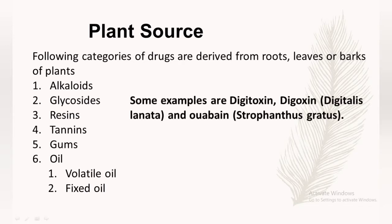Glycosides are substances which consist of a sugar molecule and a non-sugar molecule. The sugar molecule does not have pharmacological activity, while the non-sugar part has pharmacological activity; the sugar molecule has only pharmacokinetic properties. Some examples are digitoxin and digoxin, obtained from Digitalis lanata and Digitalis purpurea, and ouabain, obtained from Strophanthus gratus. Ouabain is also a potent cardiac stimulant.